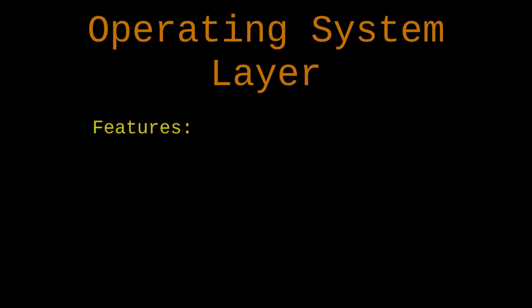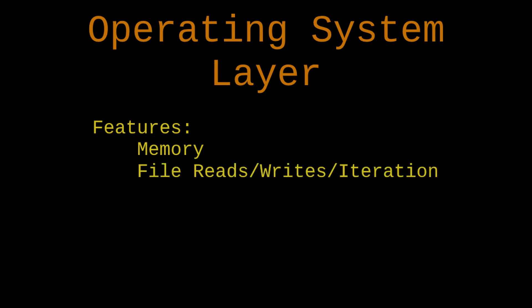For this first pass I'm going to focus on a few non-graphical operating system layer features. I'm thinking memory — that way we can finish setting up the 64-bit arenas we started in the base layer. I also want to work on file reading, file writing, path handling, and listing files in a directory. I want to set up a system for the thread context that we'll use throughout the code, kind of like the base layer.